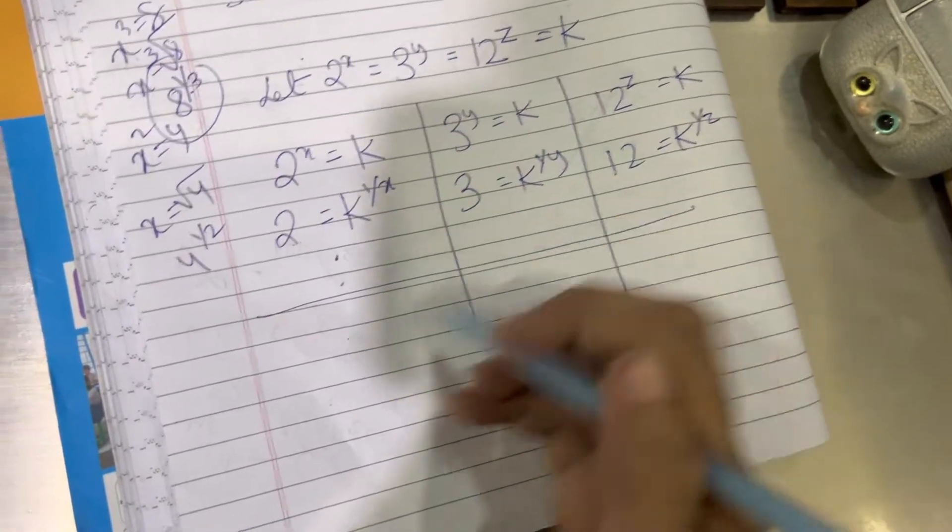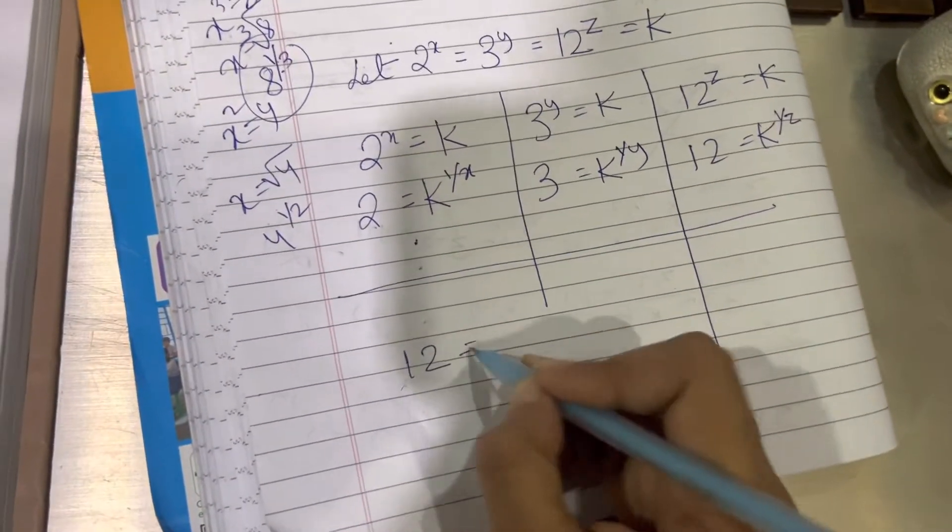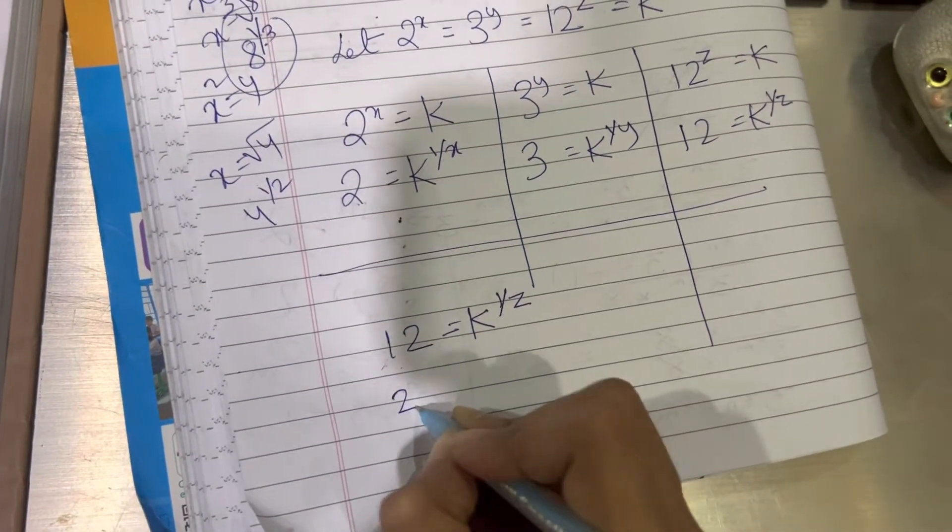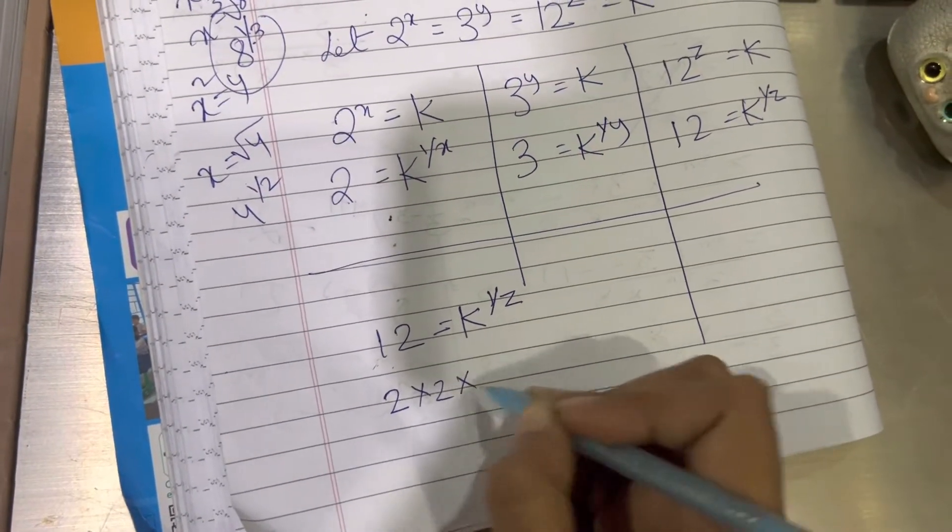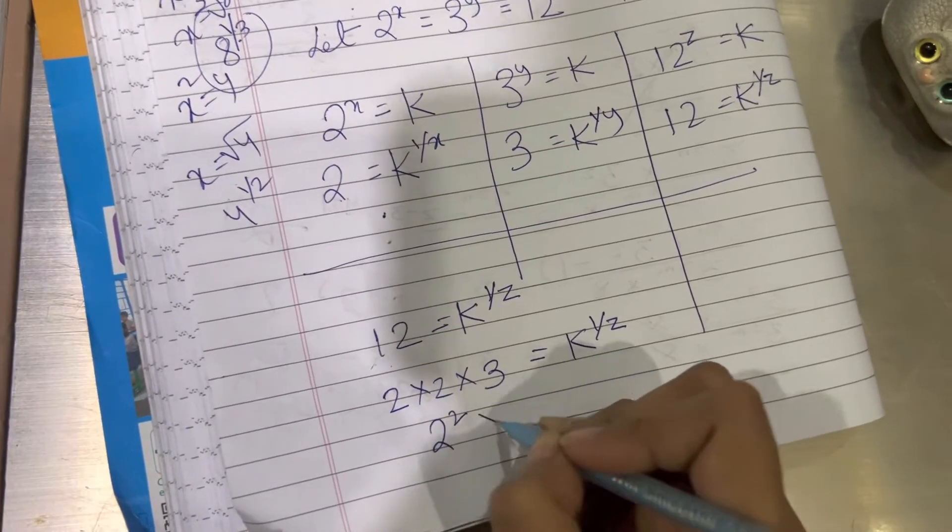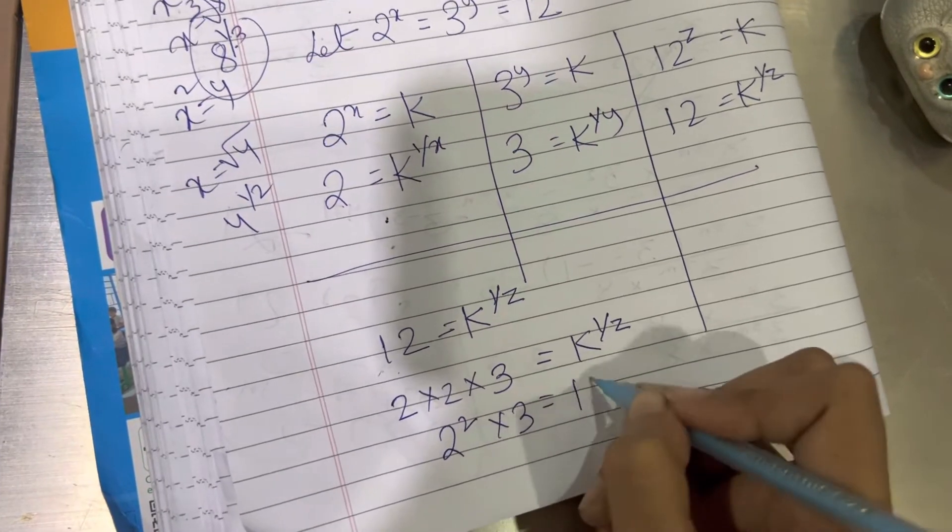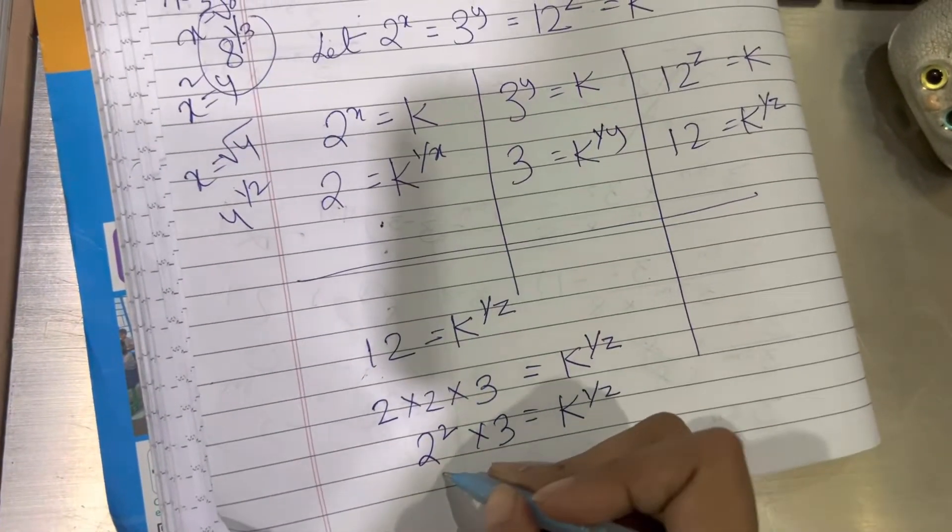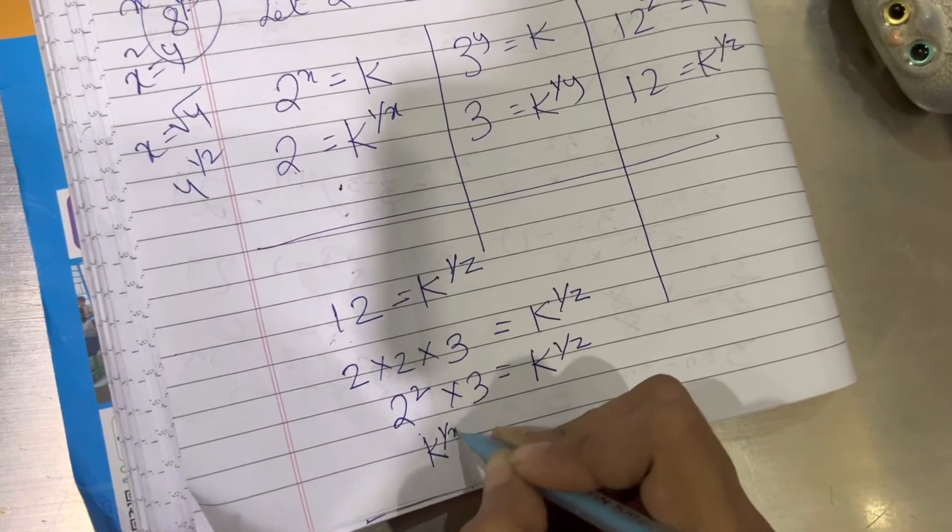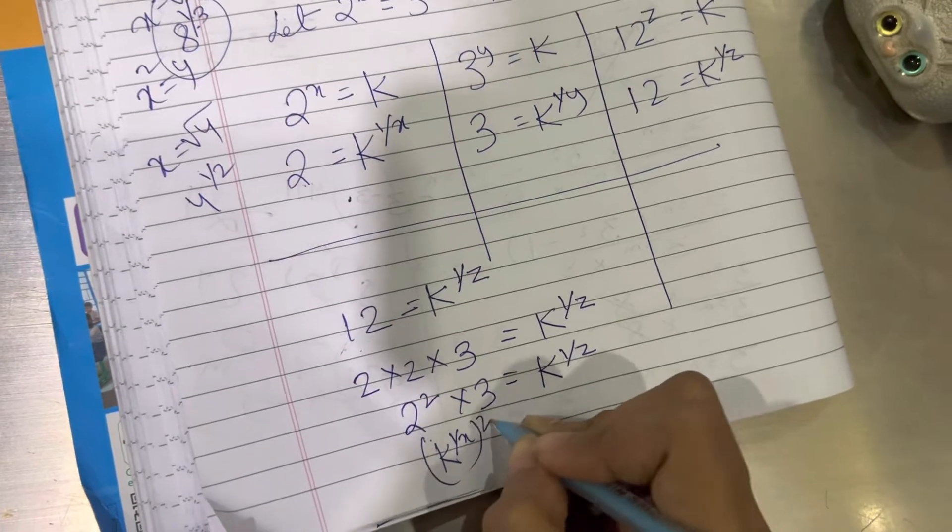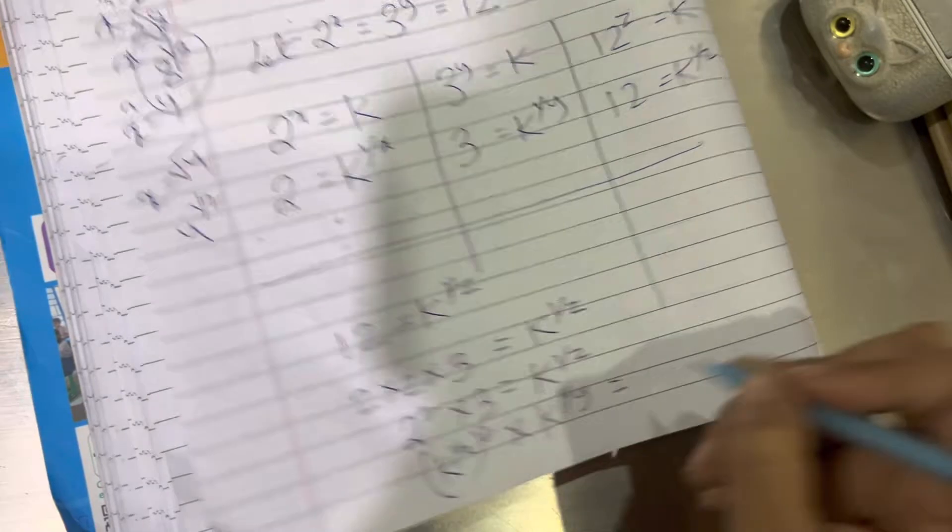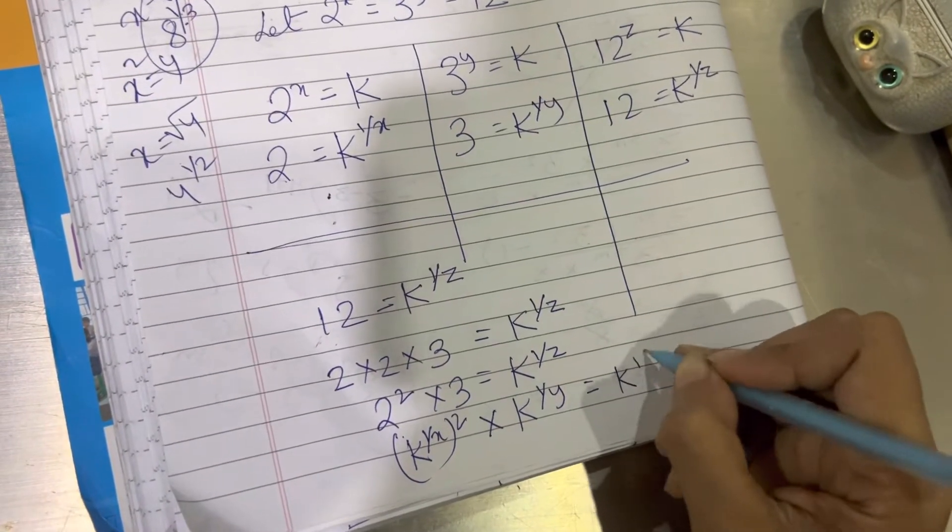Now next step. Now this 12 is equal to k to the power 1 by z. And 12 can be written as the factors of 12, 2 into 2 into 3, which is 2 square into 3. Now instead of 2, I can write k to the power 1 by x whole square. And instead of 3, I am going to write k to the power 1 by y equals to k to the power 1 by z.